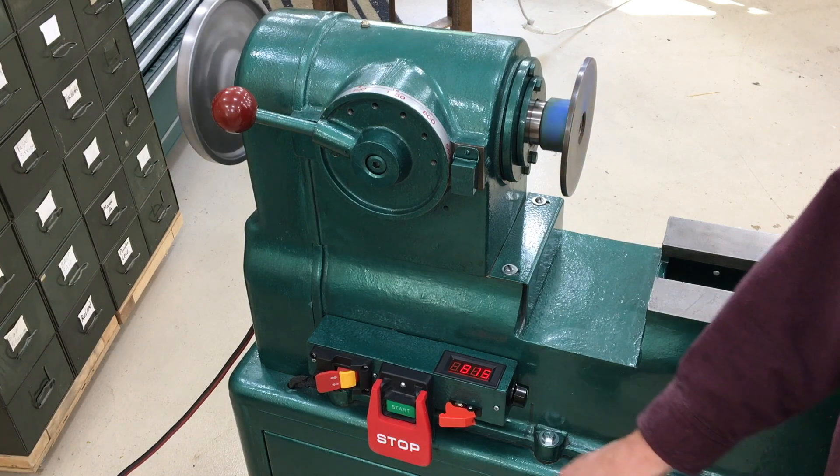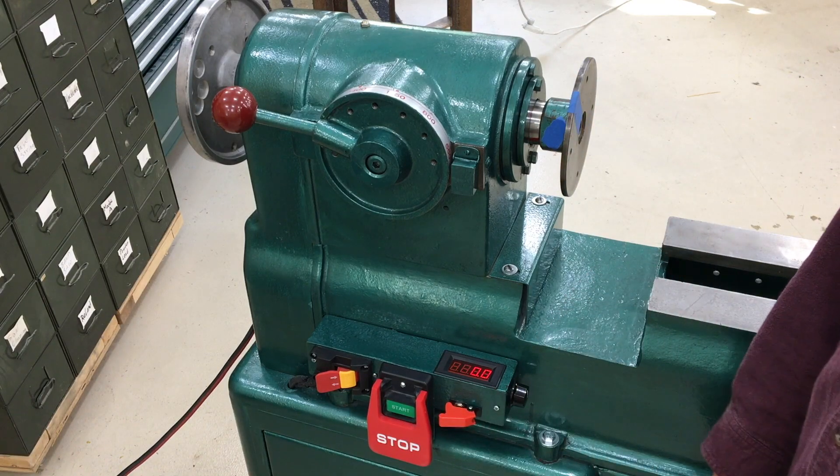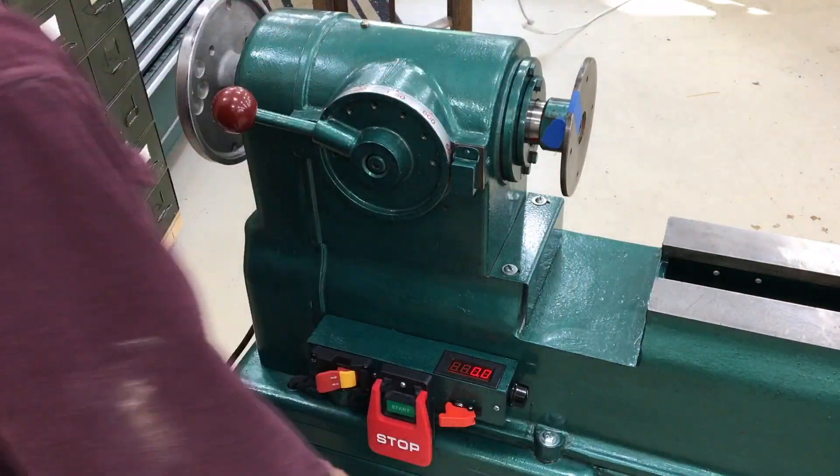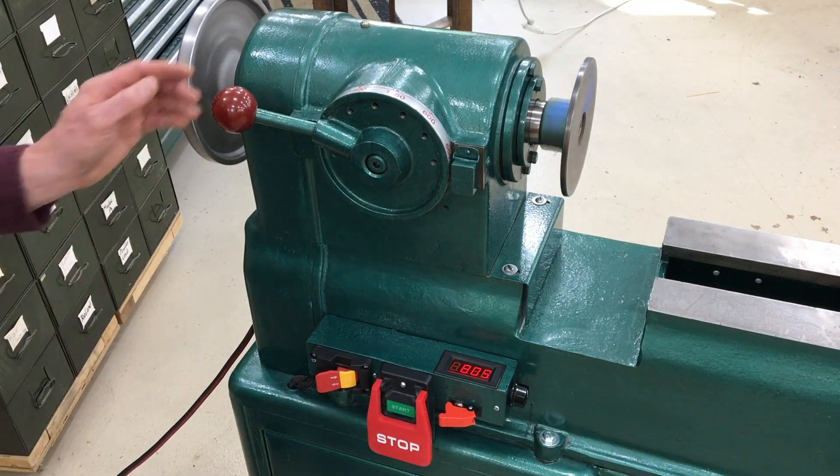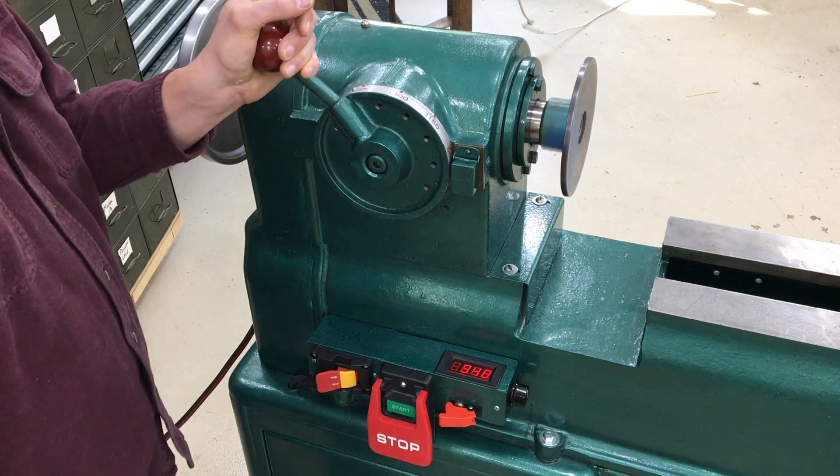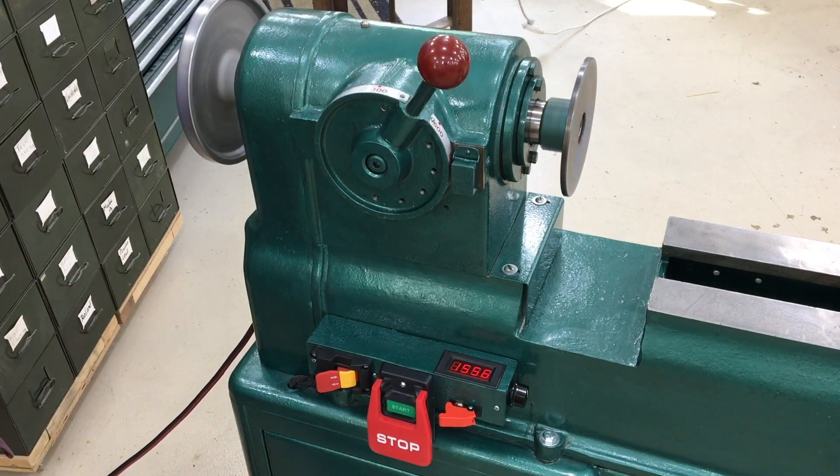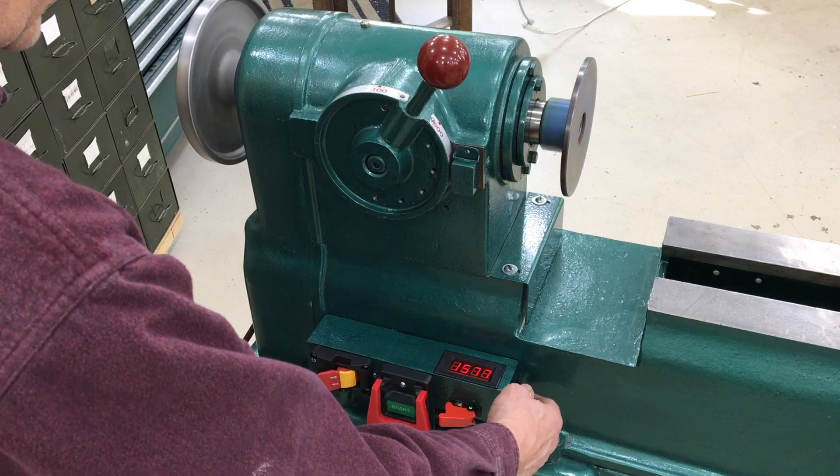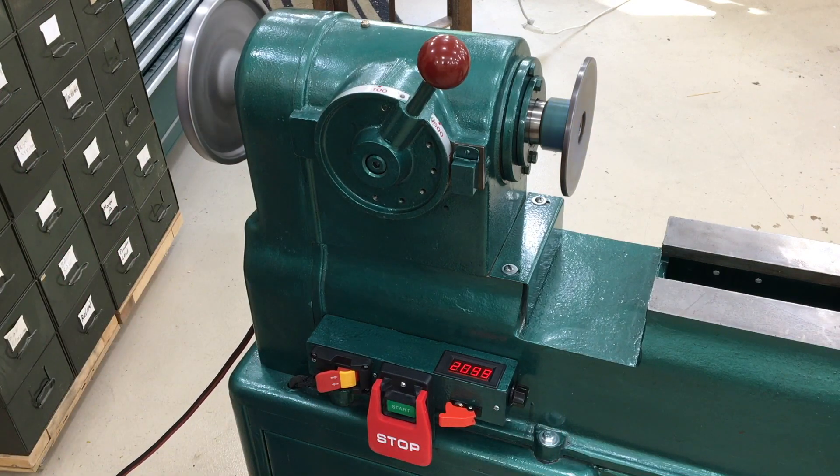Then the big paddle stop switch just tells the VFD to stop sending to the motor. The mechanical Reeves drive still works in the machine, so you've got a mechanical speed control on the spindle as well as a speed control for the motor. So really what this amounts to is you have a torque control through the Reeves drive and a motor speed control through the VFD.